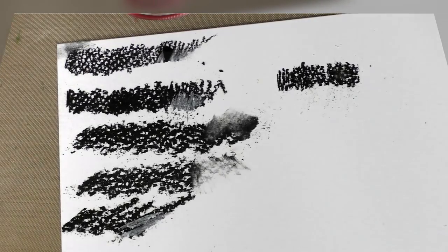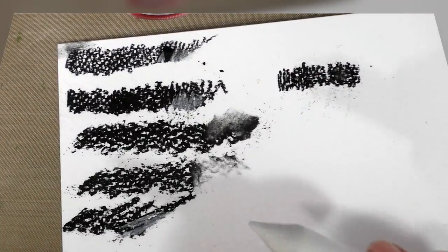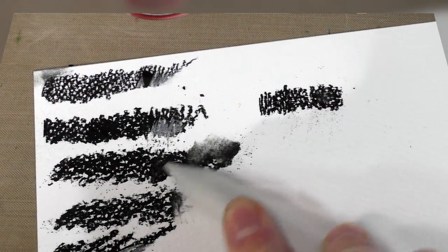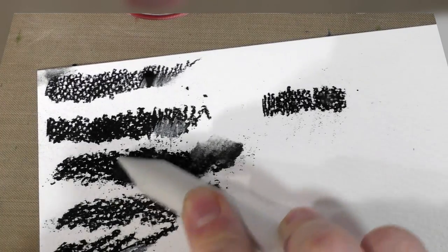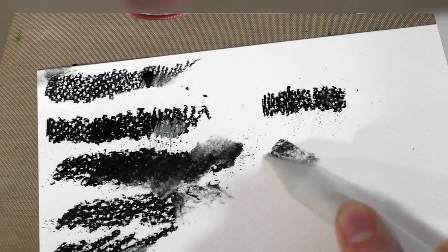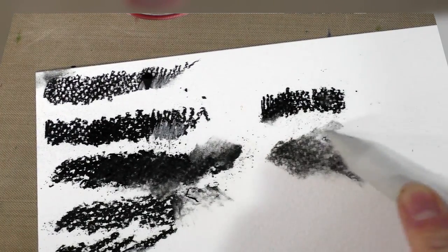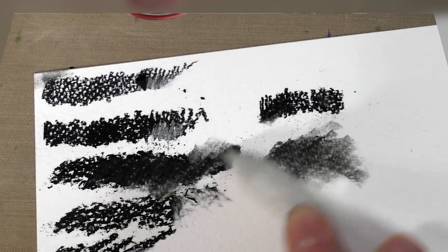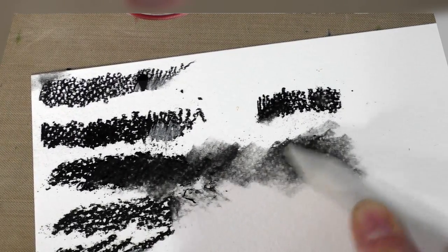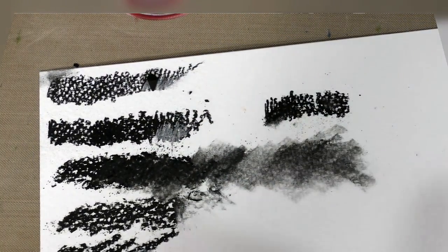We've got some blending stumps. Let's start off with a big one. So it does indeed blend and can be used to pick up some of the charcoal. Nice. This is instead of using your finger, which you're not supposed to use because it puts down oils.